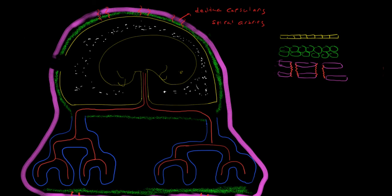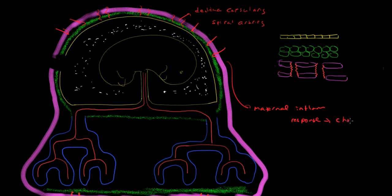Coming all the way through, all along the decidua, you get a maternal inflammatory response, and that really is the chorioamnionitis. So the maternal inflammatory response equals chorioamnionitis. All these maternal vessels here have blood in them, they sense the bacteria, and it elicits a response.